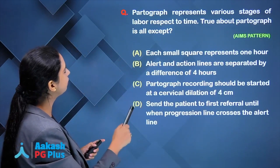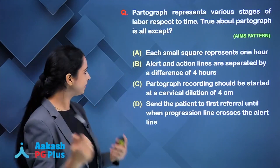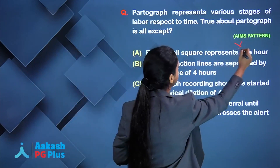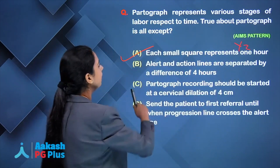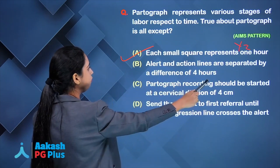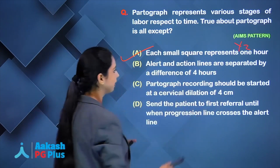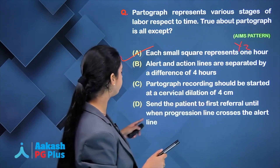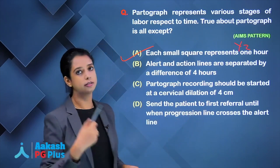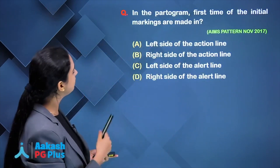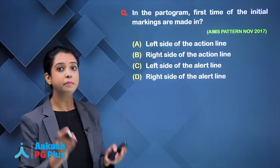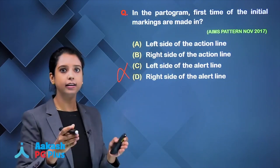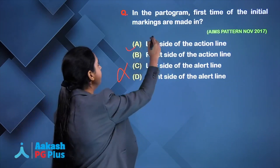Regarding true facts about the partogram: each small square represents 30 minutes, not 1 hour — so the option saying 1 hour is false and is the answer to 'all except.' Alert and action lines are separated by 4 hours — true. Recording starts at 4 cm cervical dilatation — true. Send patient to first referral unit when progression crosses the alert line — true. Initial markings are made on the alert line, which is left of the action line — true.